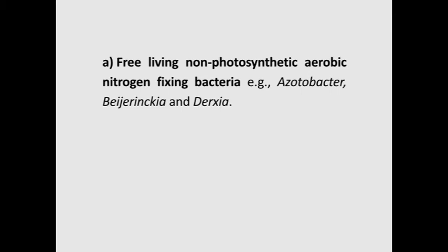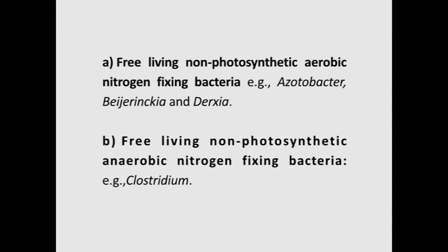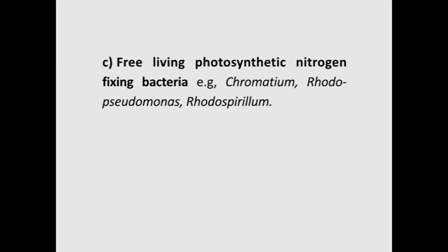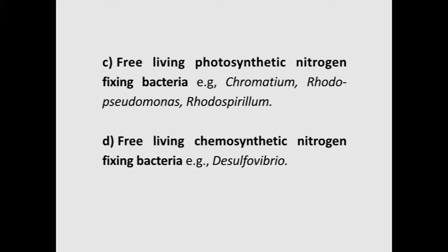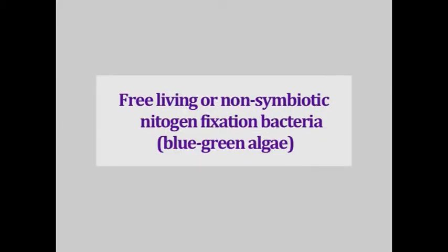The free-living or non-symbiotic nitrogen-fixing bacteria are of four types. First, free-living non-photosynthetic aerobic nitrogen-fixing bacteria, example Azotobacter and Beijerinckia. Second, free-living non-photosynthetic anaerobic nitrogen-fixing bacteria, example Clostridium, which predominates in grassland and waterlogged soils where oxygen supply is severely restricted. Third, free-living photosynthetic nitrogen-fixing bacteria, example Chromatium and Rhodospirillum. Fourth, free-living chemosynthetic nitrogen-fixing bacteria, example Sulfovibrio.